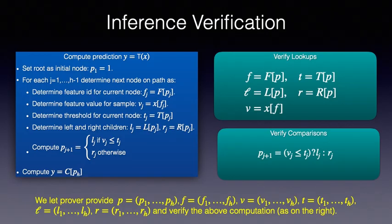The computation of a prediction for a sample is given in the blue box. We start with the root node, then at each node in the decision path, we look up the feature id and the threshold used in comparison, the values of the left and right children, and compute the next node to be the one of left or right child based on the comparison. For the final node, we also look up the corresponding class label.